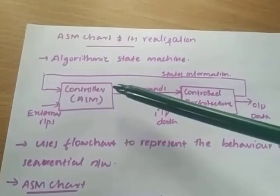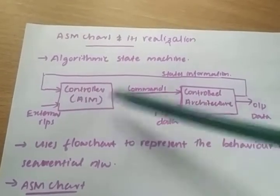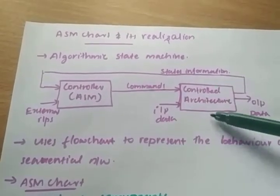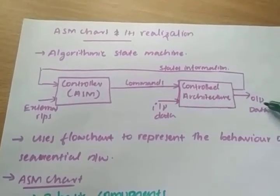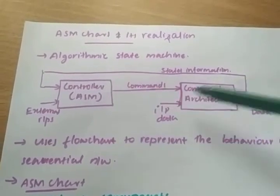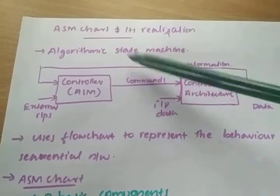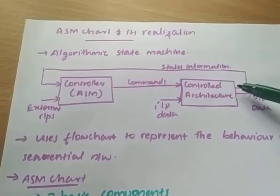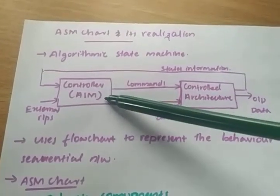This is the general structure of an Algorithmic State Machine. It consists of a control system, a controller ASM, and a controlled architecture. Command inputs are coming in, this is the output, and the state information is fed back to the controller ASM.